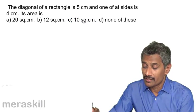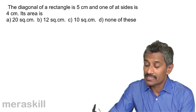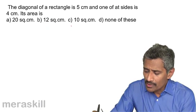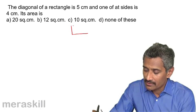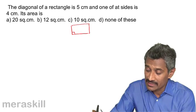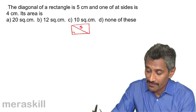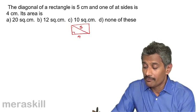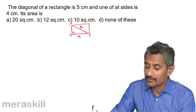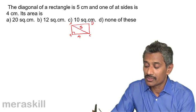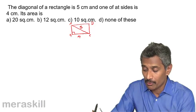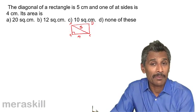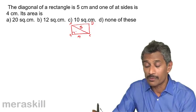Next: the diagonal of a rectangle is 5 cm and one of its sides is 4 cm. What is its area? We draw a diagram — a rectangle with a right angle, where the diagonal is the hypotenuse of the right-angled triangle, which is 5, and one side (the base) is 4. We need to find the height using the Pythagoras theorem.